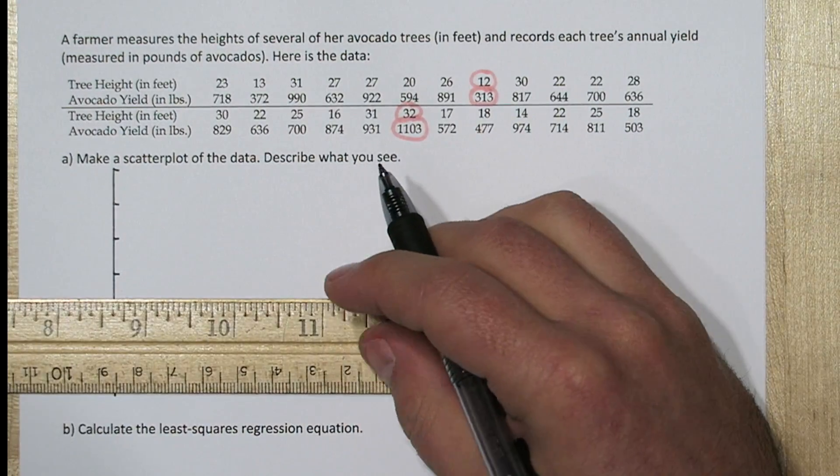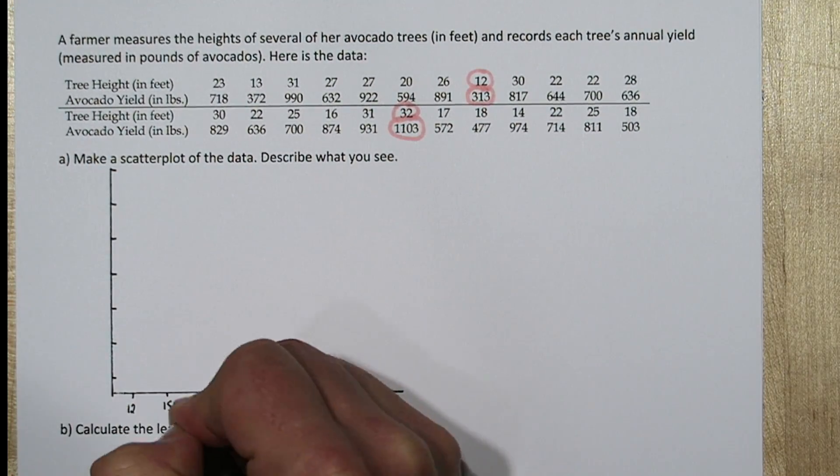So when we make our scatter plot, we want to make sure our axes at least cover those intervals of values.